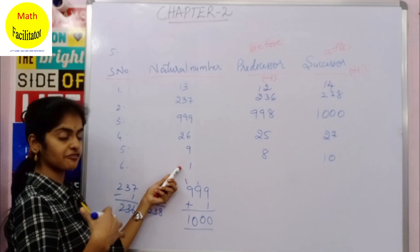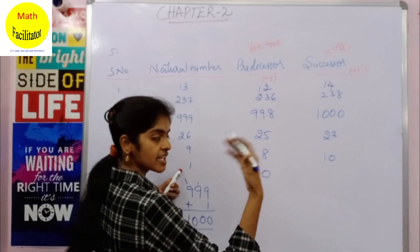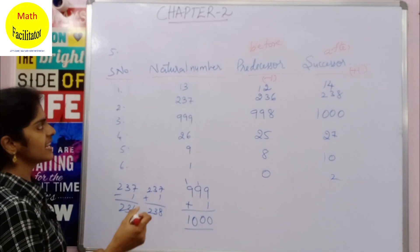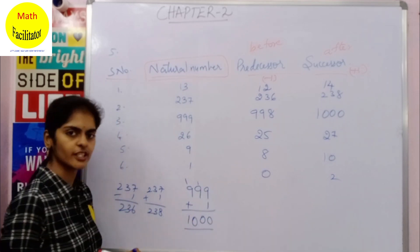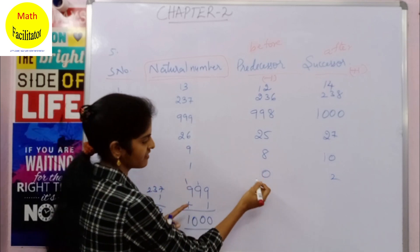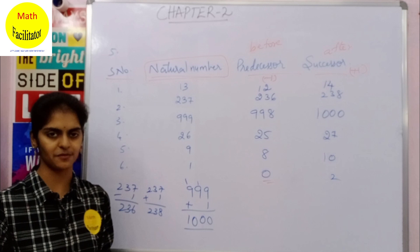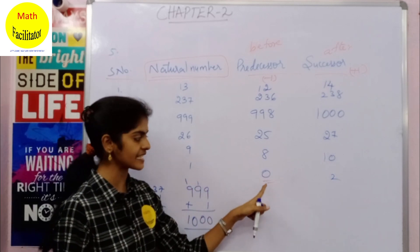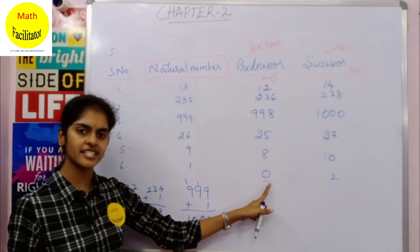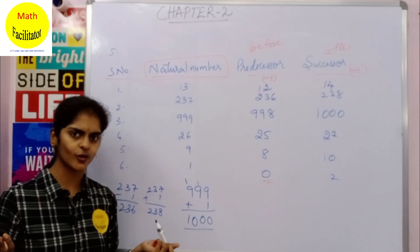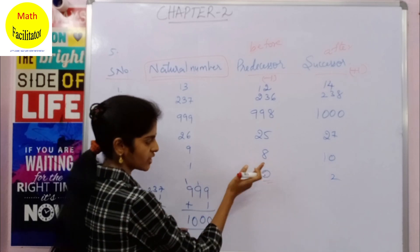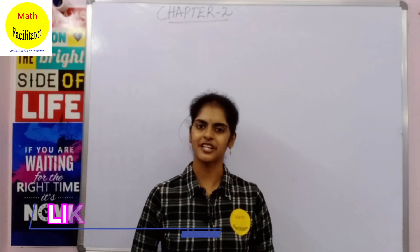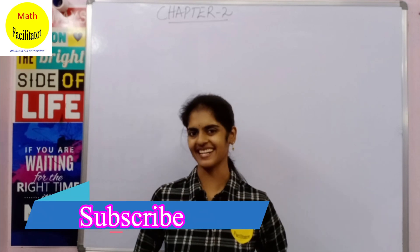For 1: the before number is 0 and the after number is 2. However, note that they are asking for natural numbers, and 0 is not a natural number. If you consider the set of whole numbers, then 1 has a predecessor which is 0. In natural numbers you don't have 0, so 1 has no predecessor in natural numbers. To get the predecessor of 1 you consider whole numbers. I hope you found this video useful — give it a thumbs up, share it with your friends, and don't forget to subscribe. Thanks for watching.